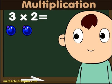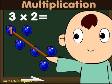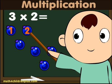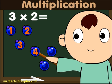Take 3 blueberries — mmm, yummy — and times them by 2. 3 blueberries twice is 1, 2, 3, 4, 5...